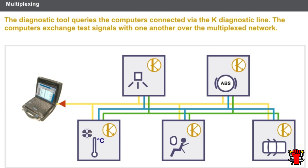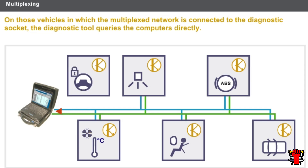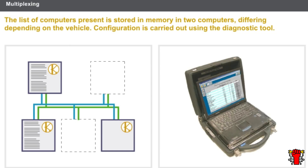The diagnostic tool displays the results of the checks on various screens. On those vehicles in which the multiplexed network is connected to the diagnostic socket, the diagnostic tool queries the computers directly. If some computers do not reply, it deduces a failure from this. Some computers cannot be diagnosed. The list of computers present is stored in memory in two computers, which may be different depending on the vehicle. Configuration is carried out using the diagnostic tool; incorrect configuration causes diagnostic errors but not vehicle dysfunctions.